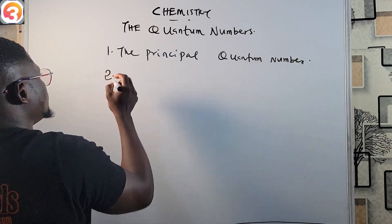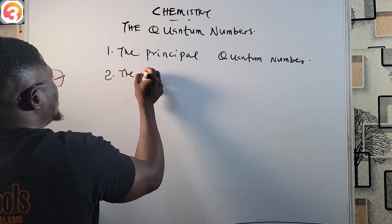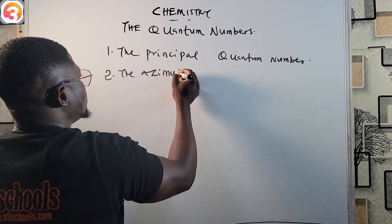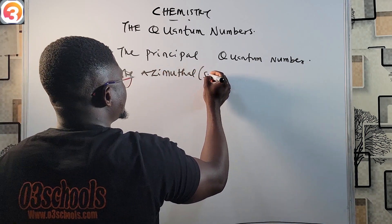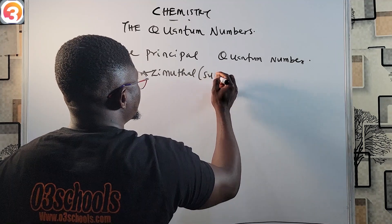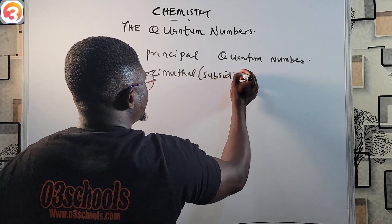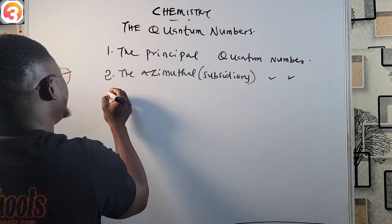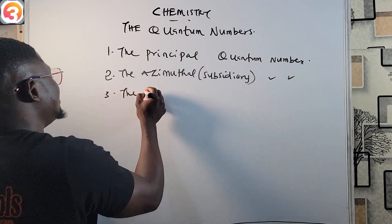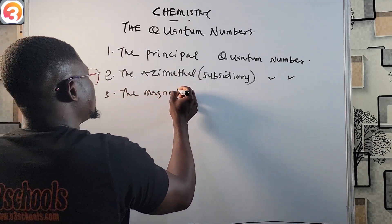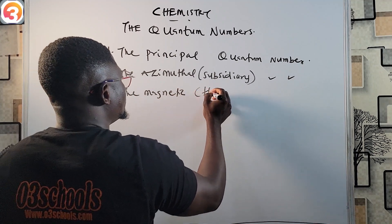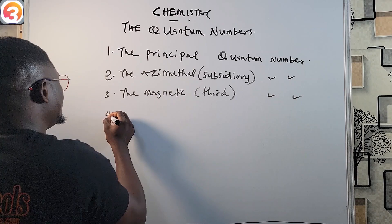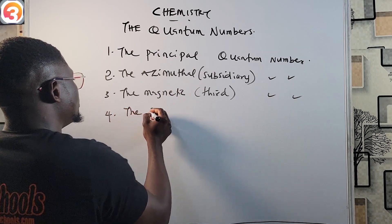Number two is the azimuthal, or the subsidiary, quantum number. Number three is the magnetic quantum number. Number four is the spin quantum number.